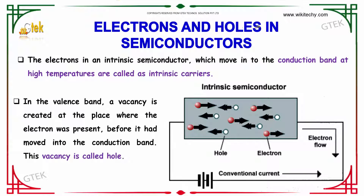We will talk about the electrons and holes in semiconductors. The electrons in an intrinsic semiconductor which move into the conduction band at very high temperature are called intrinsic carriers. In a valence band, a vacancy is created at the place where the electron was present before it had moved into the conduction band. This vacancy is called a hole.